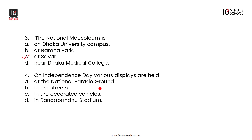On Independence Day, various displays are held. The options are: the National Parade Ground, in the streets, in decorated vehicles, or in Bangabandhu Stadium. The answer is D, Bangabandhu Stadium.